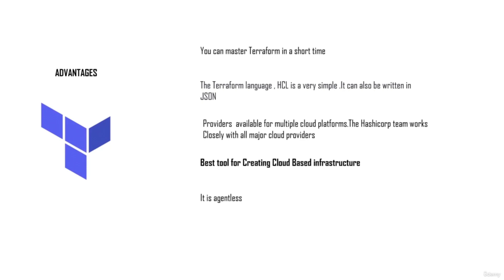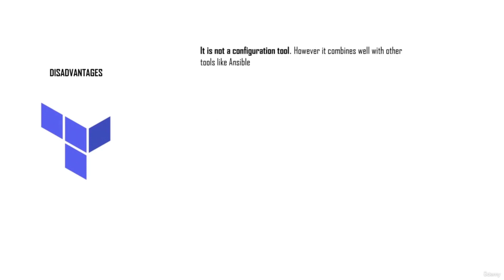Terraform is also agentless. What that means is if you are creating a virtual machine using Terraform, Terraform will not have its piece of code within those virtual machines, unlike Puppet or Chef which do have agents within each virtual machine. Because Terraform has no agents running within virtual machines, it is not recommended to use Terraform as a configuration tool for inserting or updating software within virtual machines. However, it does combine with other tools like Ansible to do the same.